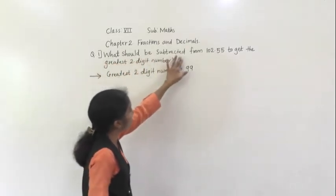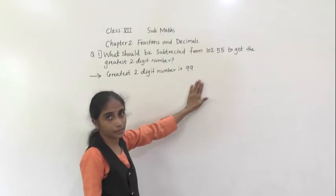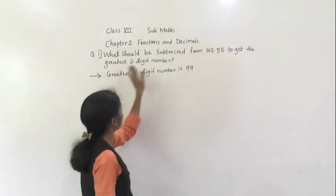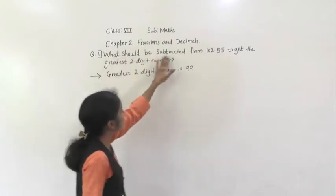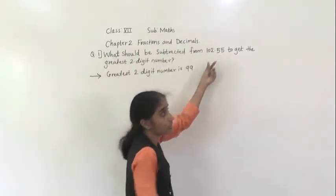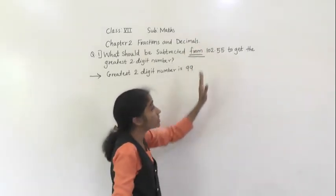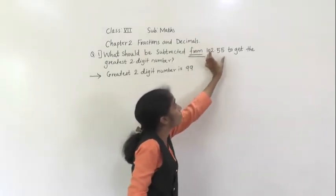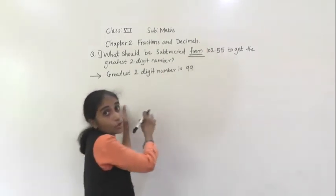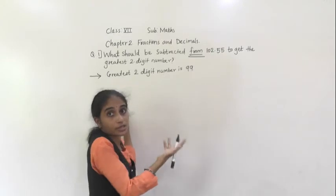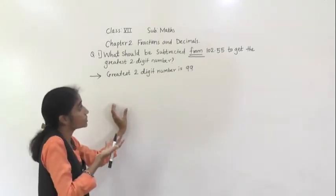So what should be subtracted from 102.55 to get 99? The number which we don't know, we have to consider X. From word came — this number we have to write first, and from this number, what number should be subtracted? We consider X.